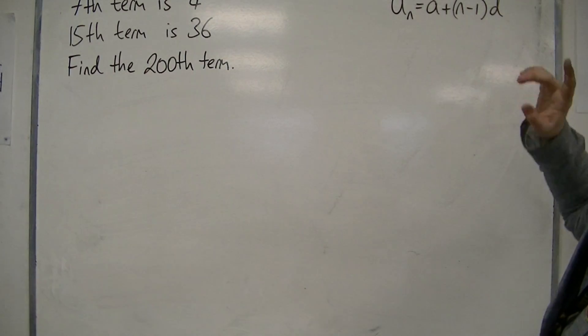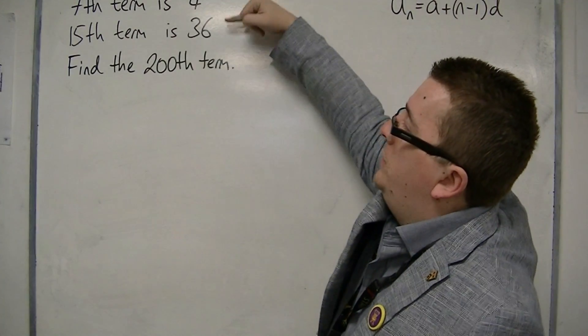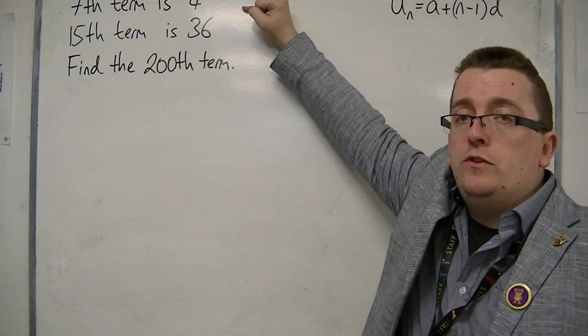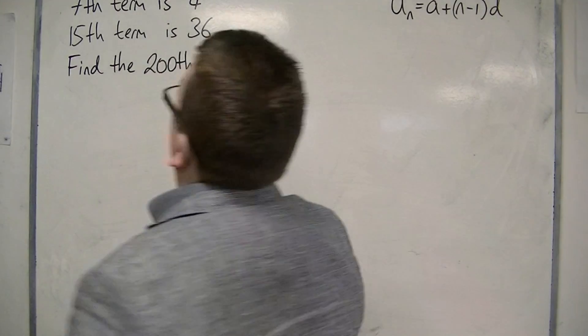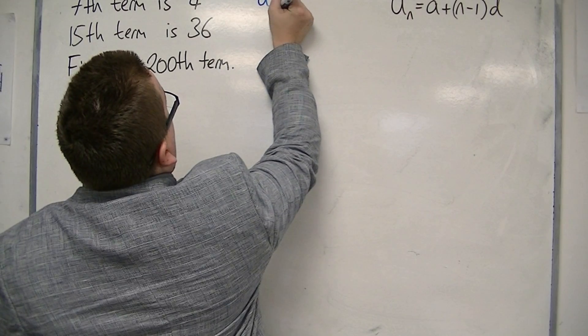However, I can use this formula in order to rewrite these two bits of information. So let's deal with the first one. The 7th term is 4.